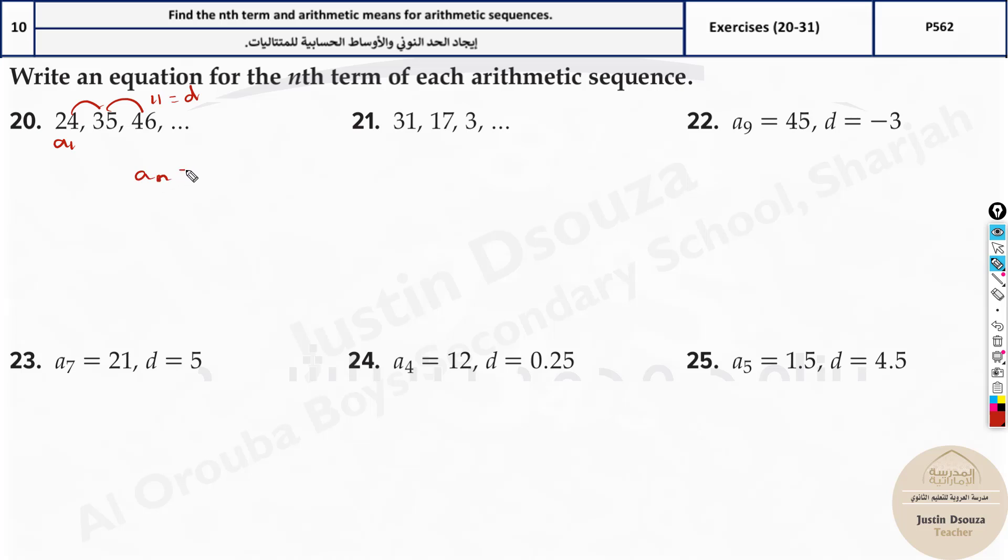Substitute in the formula. a_n equals a_1 plus n minus 1 times d. So a_n will be 24 plus n minus 1 times d is 11. Now multiply this 11 inside, it will be 24 plus 11n minus 11.